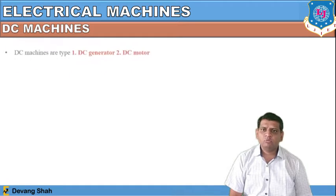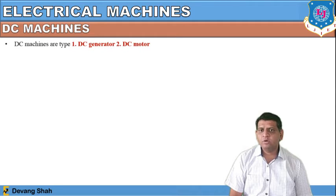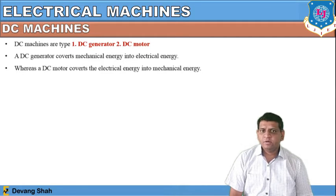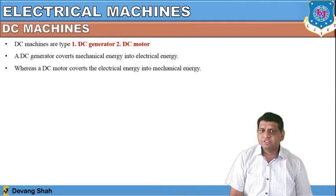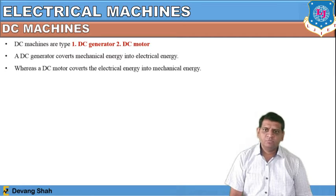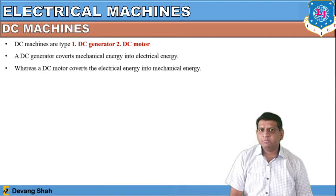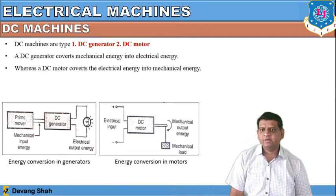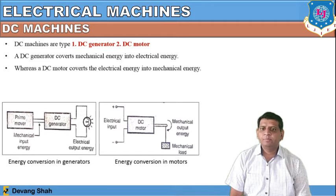So first, what are DC machines and how do they look? There are two types of DC machines we are going to discuss: one is defined as a DC generator and the other is a DC motor. The DC generator converts mechanical energy into electrical energy. From this diagram you can see the prime movers will give the mechanical energy, and that mechanical energy is going to be converted into electrical energy by means of the DC generator.